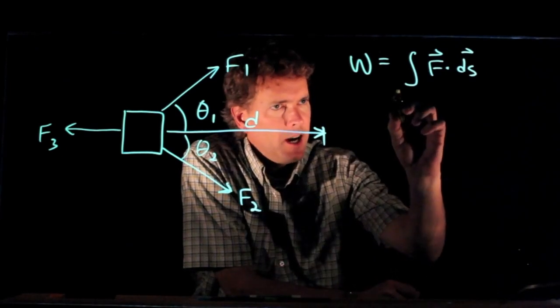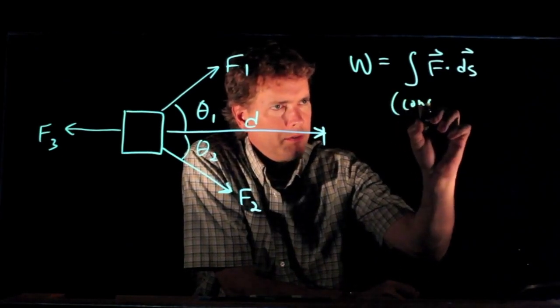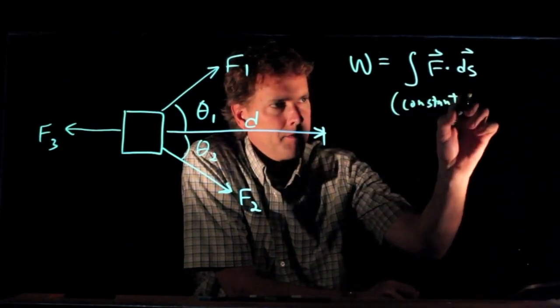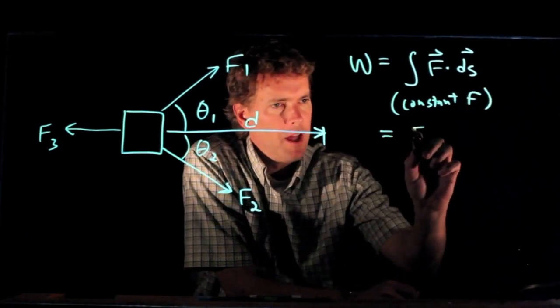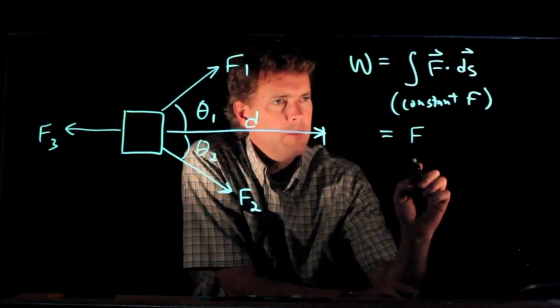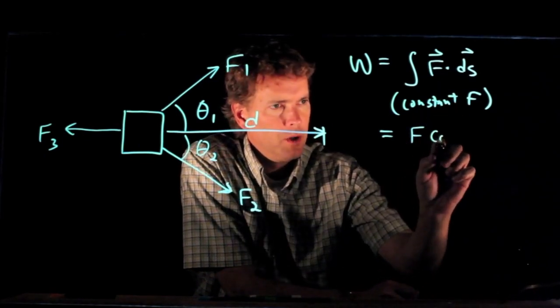Now, if it is a constant force, then that F can come right out of the integral. And so this becomes F times the angle between them, cosine theta.